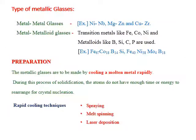Now let us move on to the types of metallic glasses. Depending on the constituent elements used, metallic glasses are classified into two types. The first is metal-metal metallic glasses, where two or more metals are mixed in proper proportion, melted based on their individual melting points, and then suddenly cooled to low temperature to obtain the metallic glass form of the alloy.